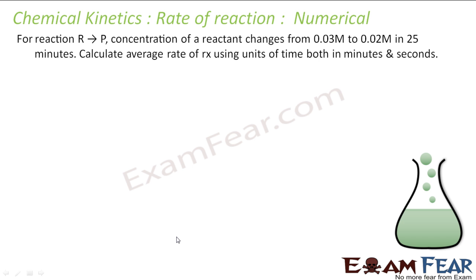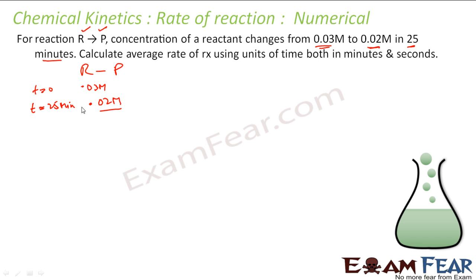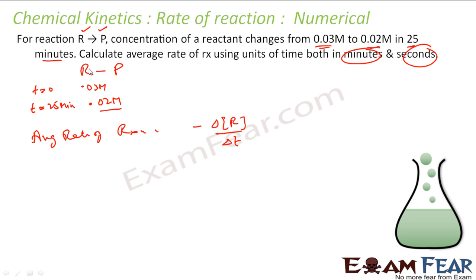Let's take one more numerical. From reactant R to product P, the concentration of reactant changed from 0.03 M to 0.02 M in 25 minutes. We have to find the average rate of reaction in both minutes and seconds. The average rate of reaction is minus the change in concentration of R with respect to T. Since the coefficient is 1, there is no division factor.